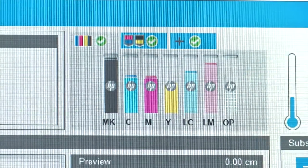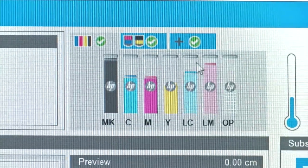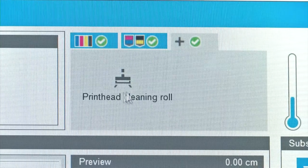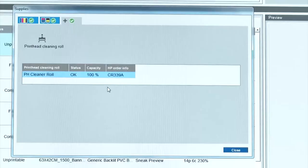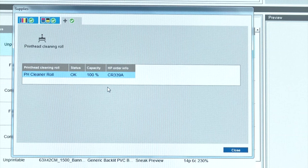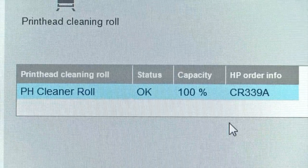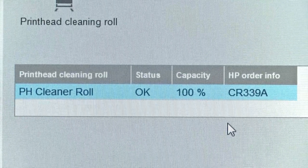Close the front door. The printer is now ready to print. The printhead cleaning roll length tracking is now reset to zero. Do not empty or remove the drain container. This is done by a service engineer during preventative maintenance.